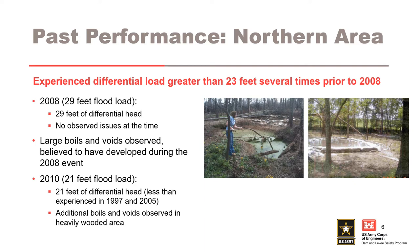Two potential backward erosion piping locations were examined in the first case history presentation: the northern area and the southern area. A more in-depth discussion of past performance issues in these areas is needed to provide context into the thought processes that led to the 2011 flood fighting efforts. In the northern area, the history of poor performance was less tied to the amount of observed performance issues and was instead more significantly focused on the severity of the single issue that was encountered.